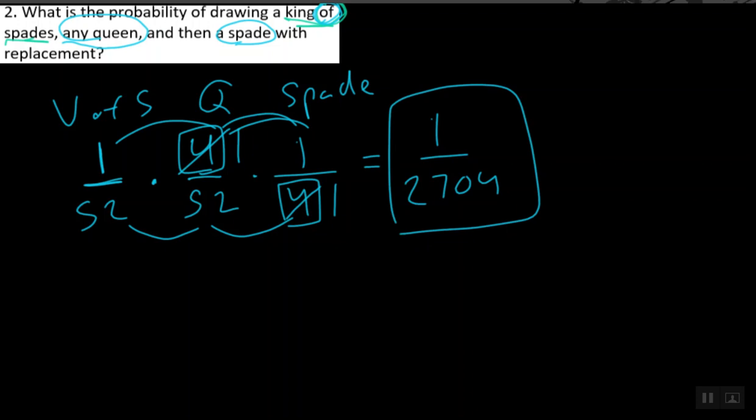So the probability of you drawing a king of spades, and then a queen, and then a spade with replacement, meaning we're putting the cards back in the deck every single time, is one out of 2,704 times. I would not make that bet. All right, y'all. I'll let y'all finish this page, and I'll see y'all in our level three video.